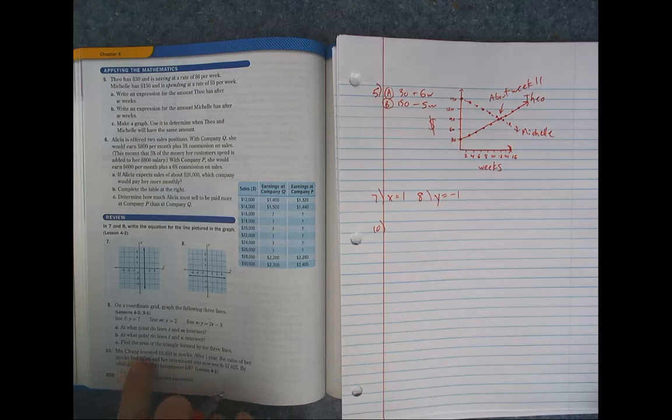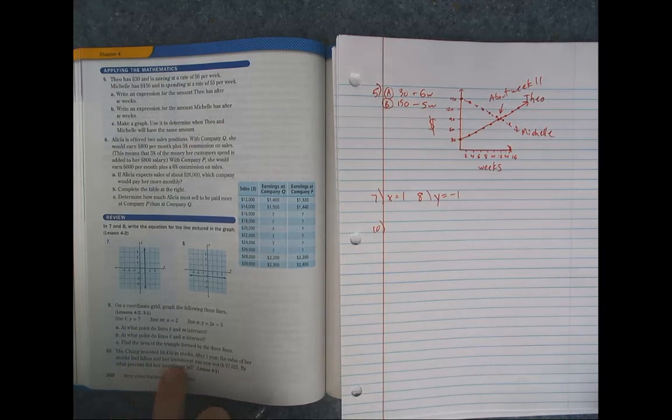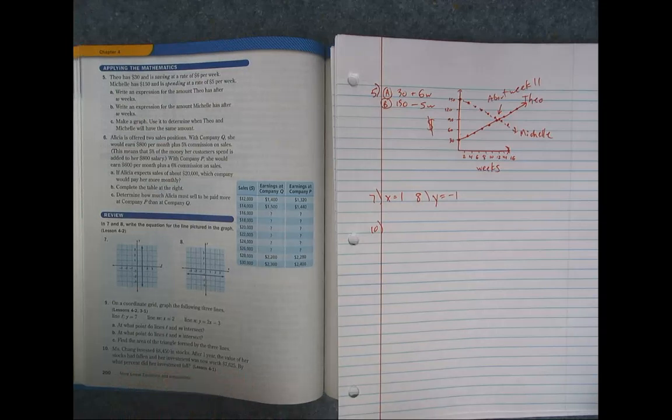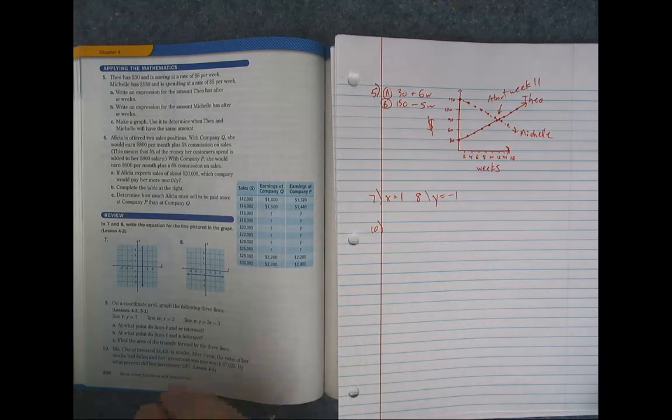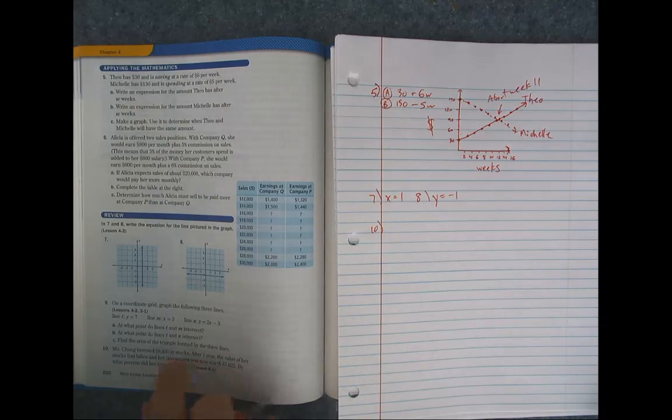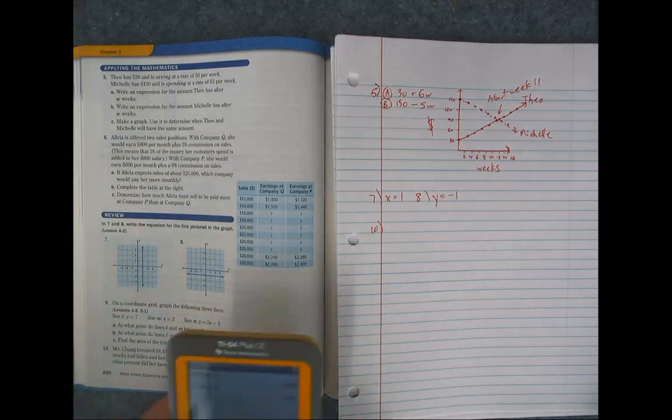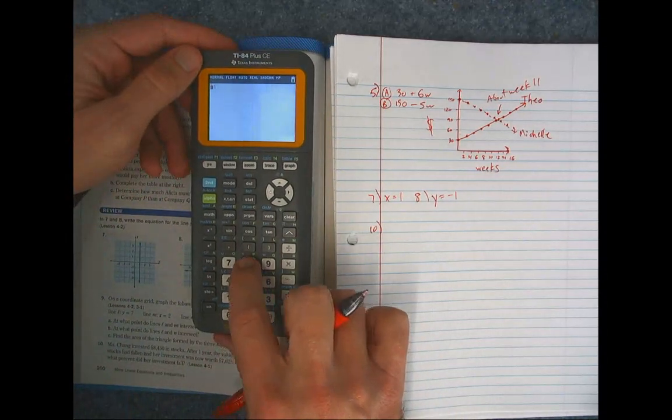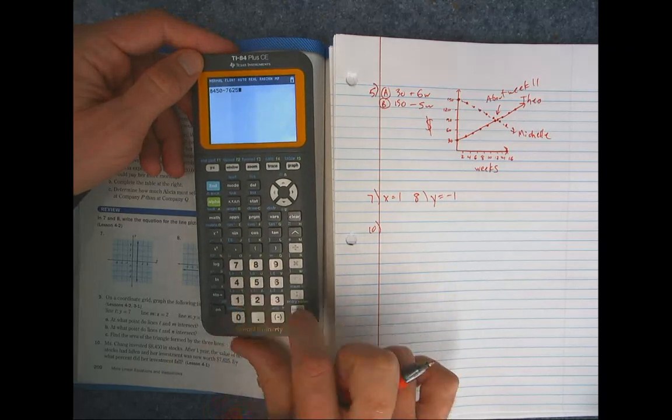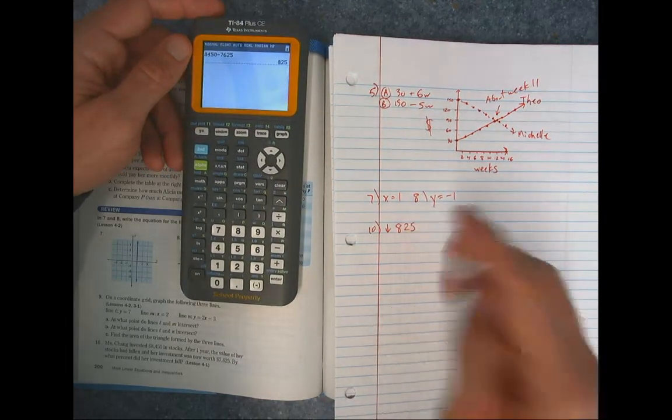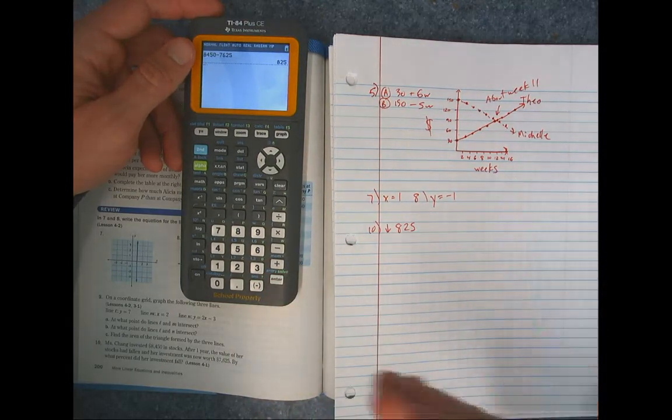All right, and then we went to number 10. So we're investing this much in stocks. After one year, the value has fallen. And her investment is now 7,625. By what percent did her investment fall? So it's not asking what percent is it now. It's asking what percent did it fall? So first of all, if we're going to start comparing numbers, we need to know how much it fell. Because we're not talking about what percent is it now compared to what it used to be. That's not the question. It's by what percent did it fall? So right now, we don't have the number that even represents how much it fell. So we got to subtract. So we're going to do 8,450 minus 7,625. So the amount that it fell is it went down $825. And we want to know what percent is that from where you started. Because that's what it's compared to. I had this much. It went down this much. What percent did it fall?